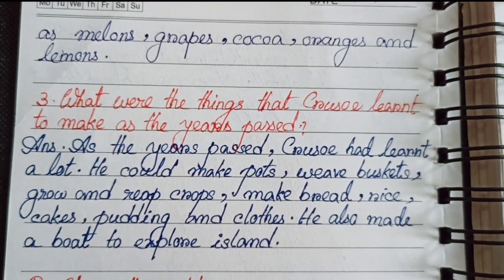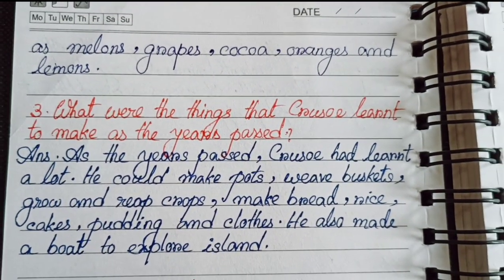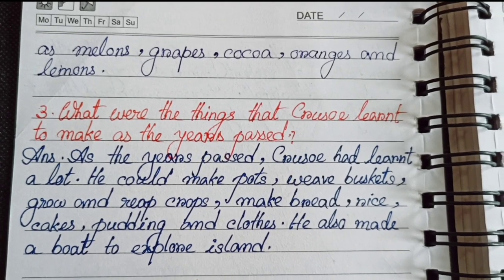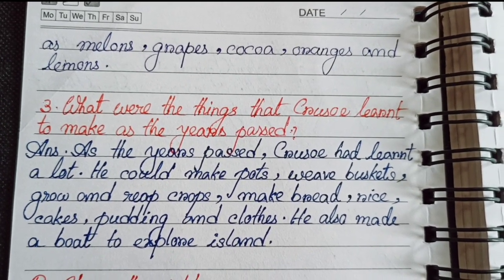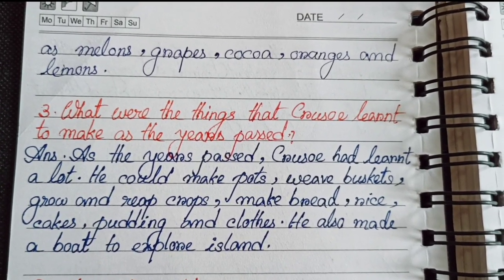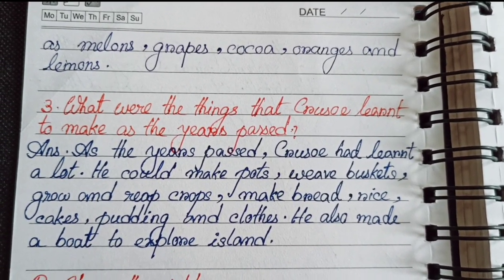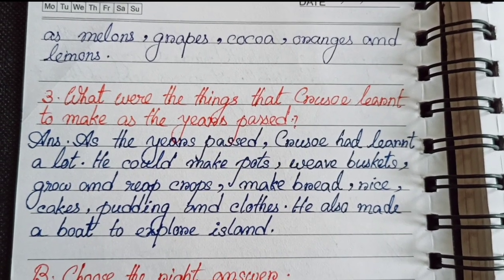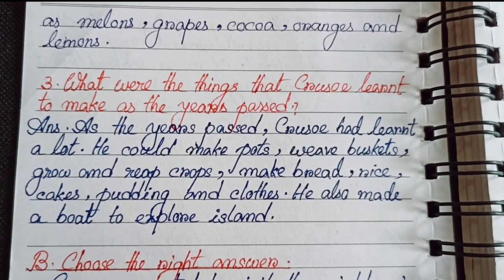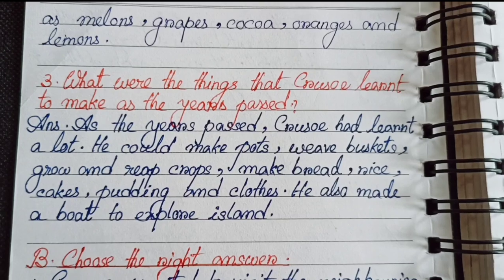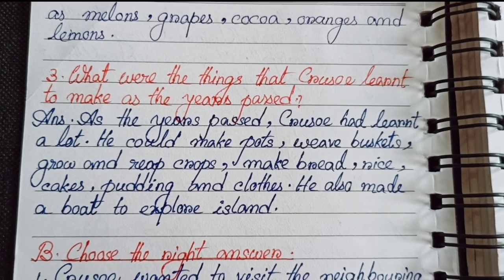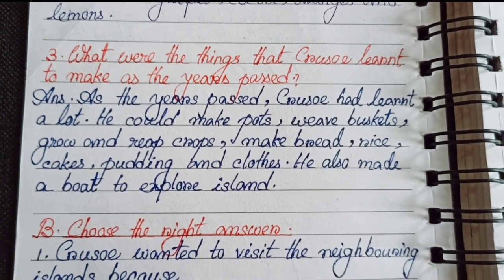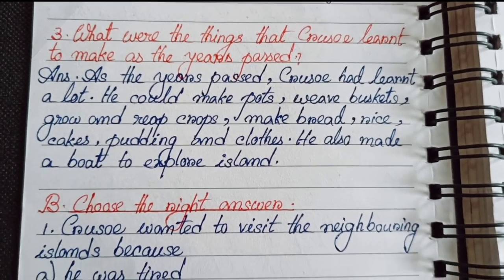Question 3: What were the things that Crusoe learned to make as the years passed? As the years passed, Crusoe had learned a lot. He could make pots, weave baskets, grow and reap crops, make bread, rice cakes, pudding, and clothes. He also made a boat to explore islands.